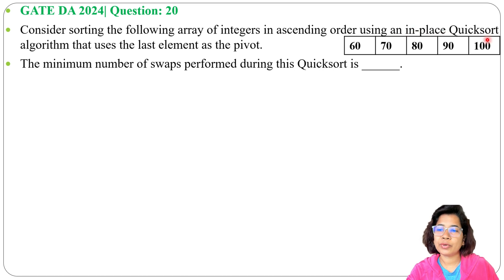The algorithm uses the last element as the pivot. The minimum number of swaps performed during the Quicksort is blank. We have an array we need to arrange in sorting order considering the last element as pivot.